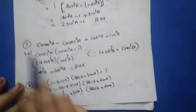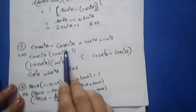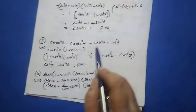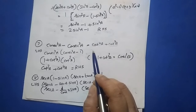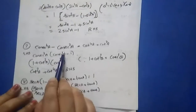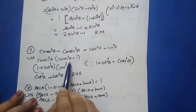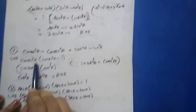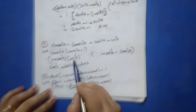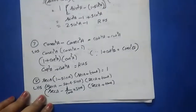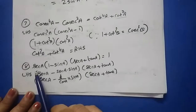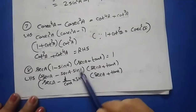Question seven: cosec⁴a − cosec²a = cot⁴a + cot²a. The answer is in terms of cot, so you do not need to convert everything to sin and cos. Take cosec²a as common: cosec²a(cosec²a − 1). Replace cosec²a with (1 + cot²a) and use cosec²a − 1 = cot²a. Remove the bracket and you get cot²a + cot⁴a, which equals the right hand side.